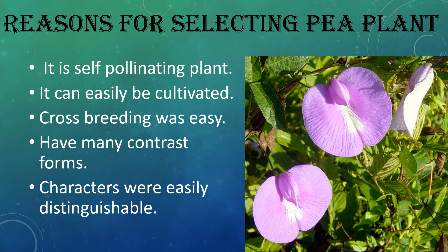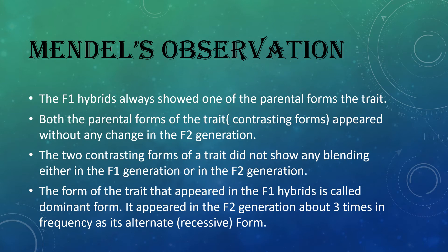These were the reasons why he selected the pea plant for the experiment. After conducting the experiments, he found that F1 hybrids always show only one of the parental forms — out of two, only one parental form is represented in F1. But in F2 generation, both parental forms appear without any change, meaning there is no blending at all.